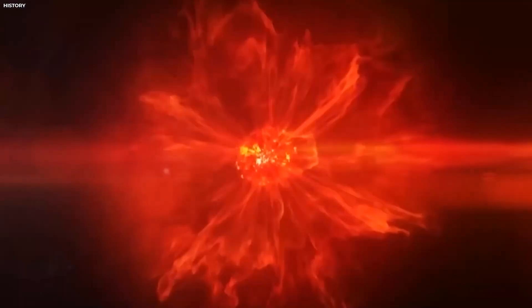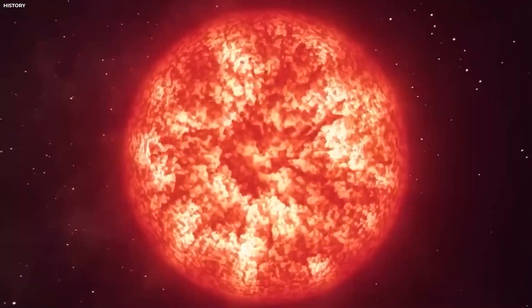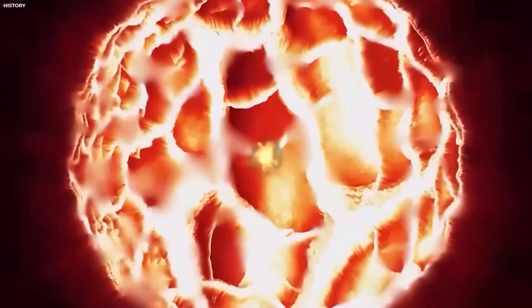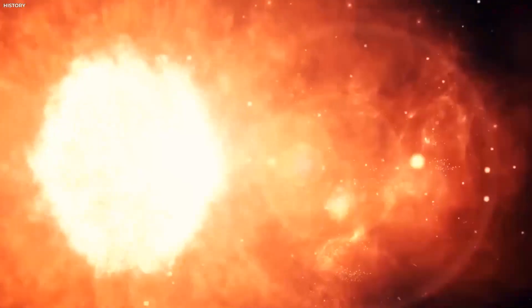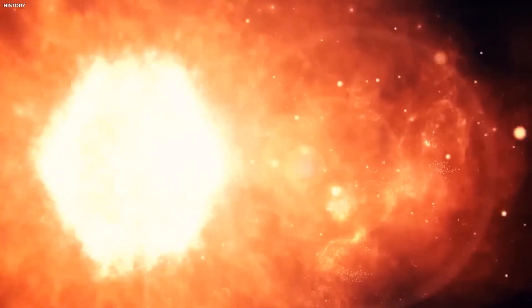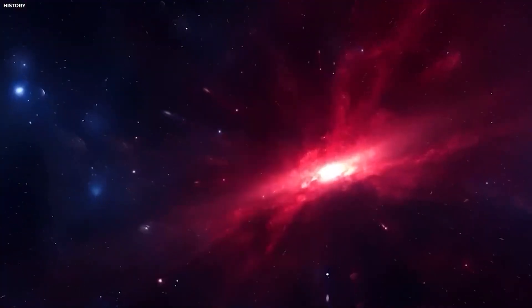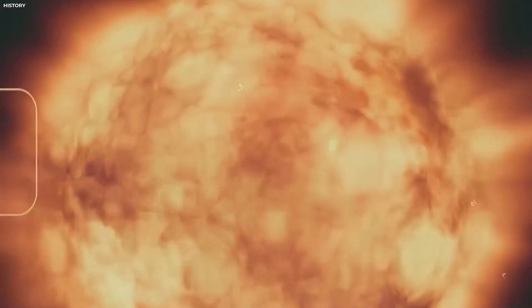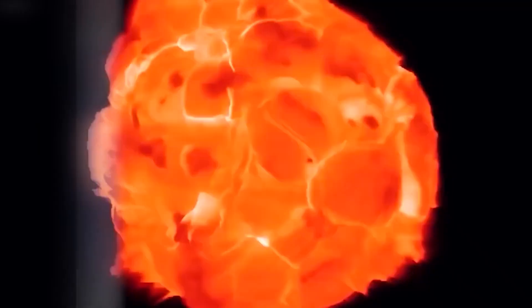Even though this burst of brightness is grabbing everyone's attention, it's important not to jump to conclusions. Betelgeuse's unpredictable behavior doesn't necessarily mean a supernova is just around the corner. Still, this whole event is a reminder that stars aren't just massive burning balls hanging out in space. They're dynamic, ever-changing, and sometimes downright chaotic. And when you're a red supergiant at the end of your life, things get even more unpredictable.